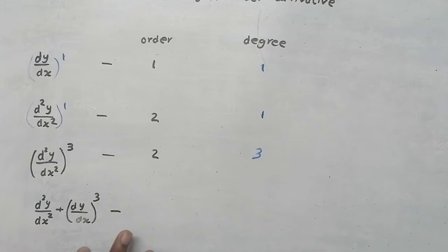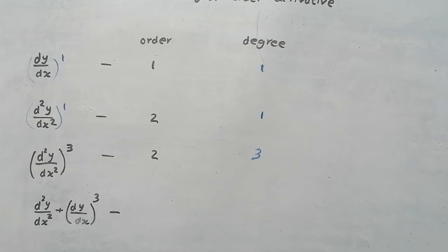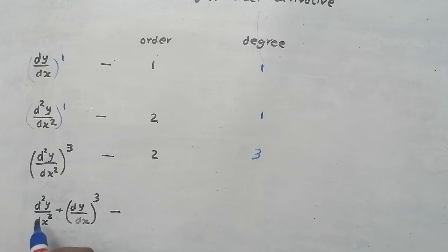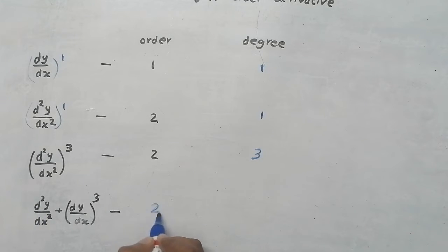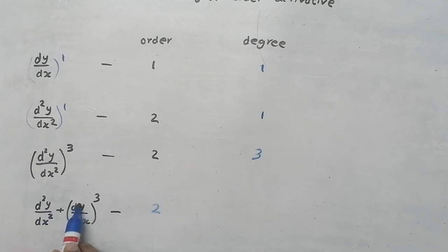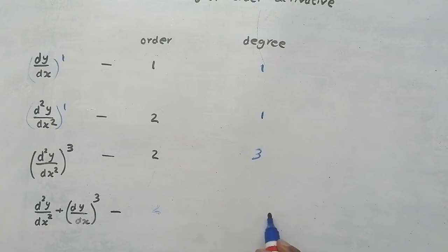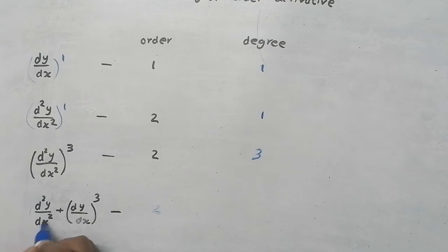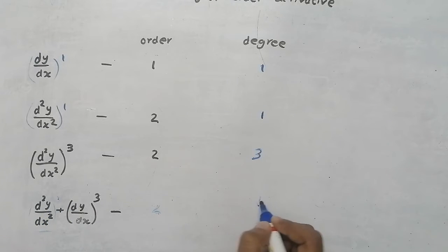Now in this question, we need to find the order and degree, and there are two derivatives. To find the order, we check which term in the equation has the highest order. This is a first order derivative and this is a second order derivative, so order is going to be 2 — we take the highest order derivative from the equation. Now what is degree? Degree is the power of the highest order term. Here the power of the highest order term is 1, so degree is going to be 1.